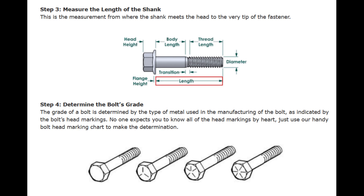Step 3: Measure the length of the shank. This is the measurement from where the shank meets the head to the very tip of the fastener. Step 4: Determine the bolt's grade. The grade of a bolt is determined by the type of metal used in manufacturing, as indicated by the bolt's head markings. No one expects you to know all of the head markings by heart — just use a handy bolt head marking chart to make the determination.